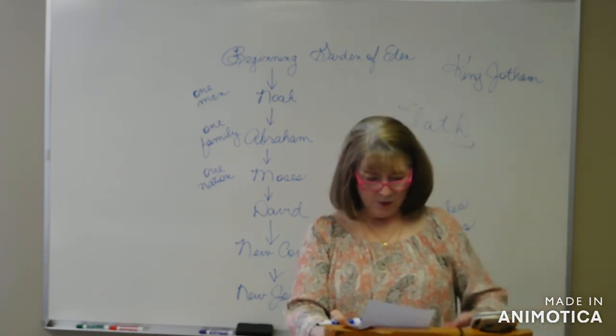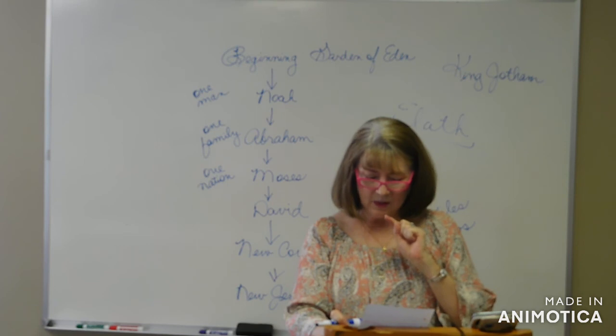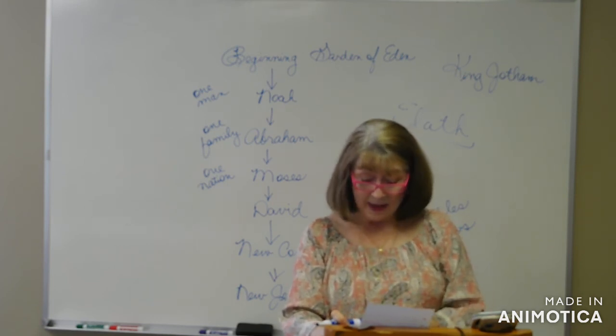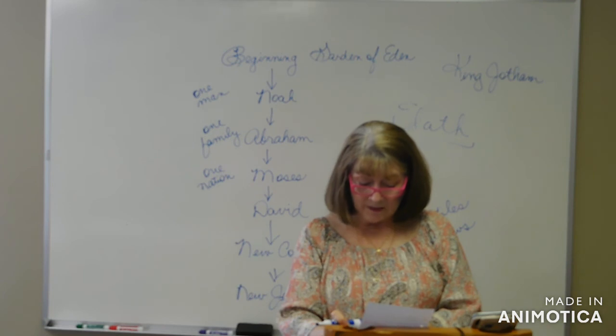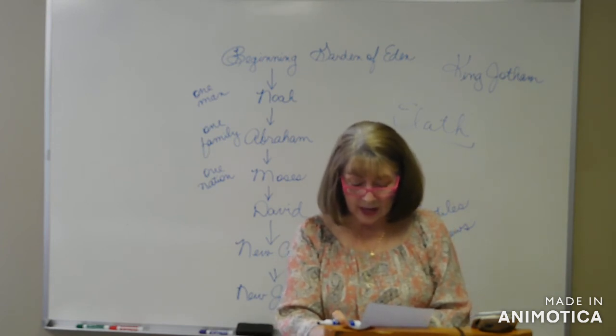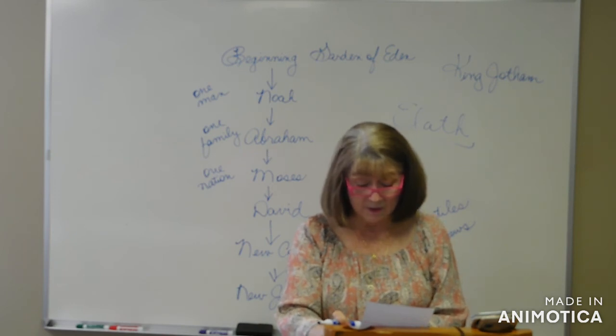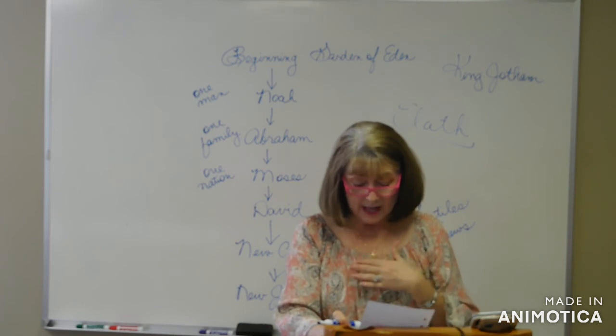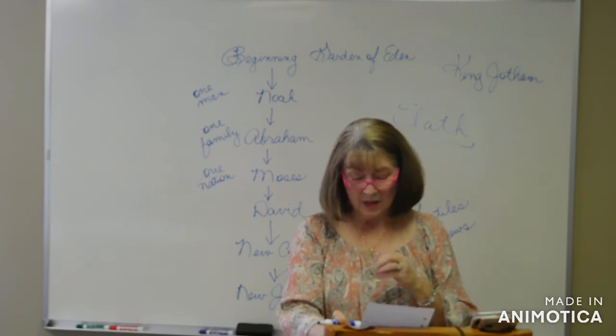And I want to read very quickly Revelation chapter 6, verse 12 through 17. I watched as the Lamb broke the sixth seal and there was a great earthquake. The sun became as dark as black cloth and the moon became as red as blood. Then the stars of the sky fell to the earth like green figs falling from a tree shaken by a strong hand. The sky was rolled up like a scroll and all of the mountains and islands were moved from their places. Then everyone, the kings of the earth, the rulers, the generals, the wealthy, the powerful, and every slave and free person, all hid themselves in the caves and among the rocks of the mountains. And they cried to the mountains and the rocks, fall on us and hide us from the face of the one who sits on the throne and from the wrath of God. For the great day of their wrath has come and who is able to survive?